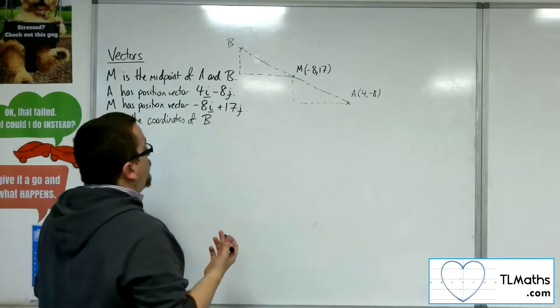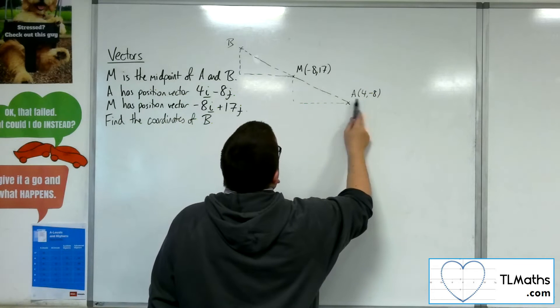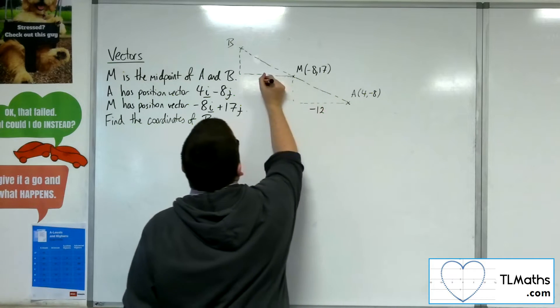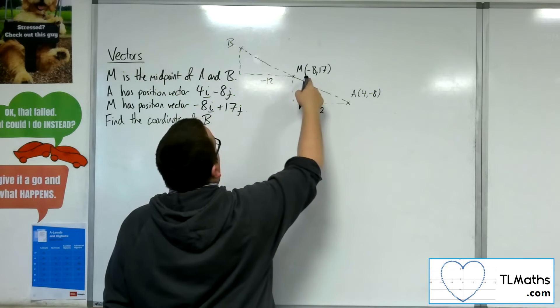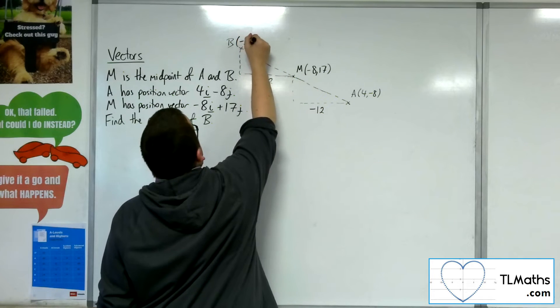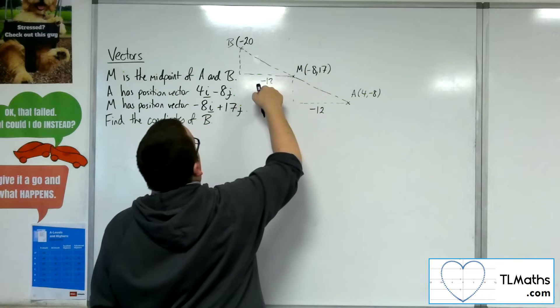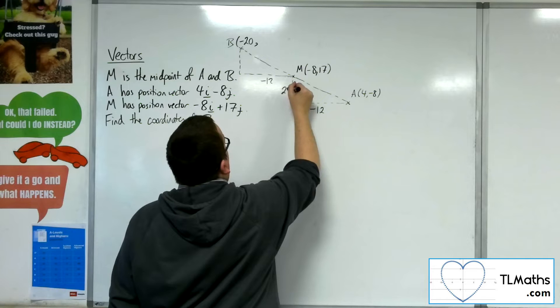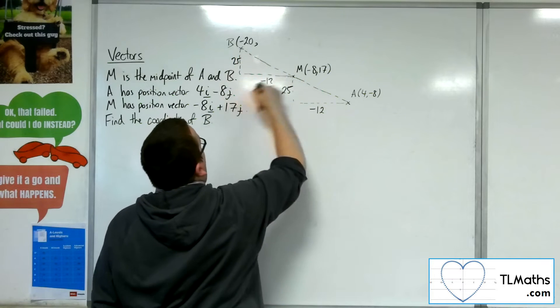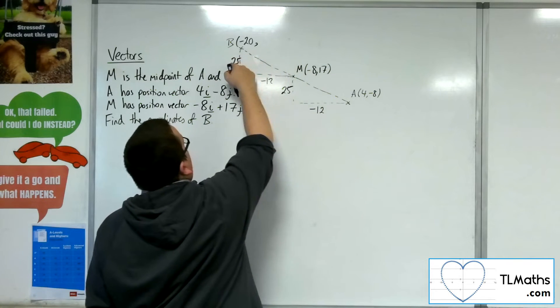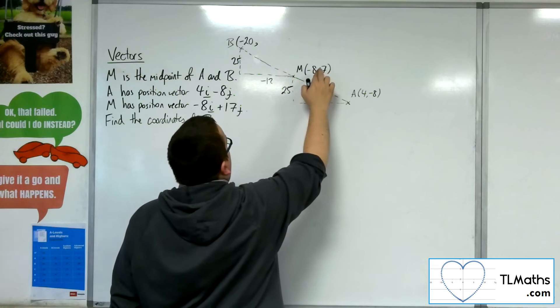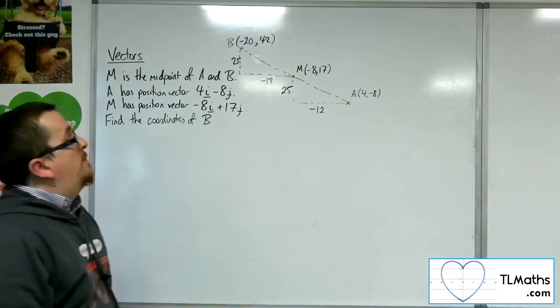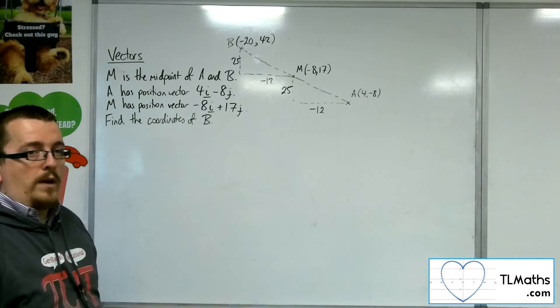OK, so 4 to minus 8, I would be doing minus 12. So I'm going to do minus 12 there. So I know that this is going to be minus 20. So minus 8, take away 12. And minus 8 up to 17 is 25. So that's going to be 25. 17 plus 25 is 22, 42. OK, so B is minus 20, 42. So you could do it that way.